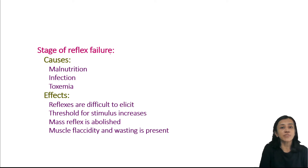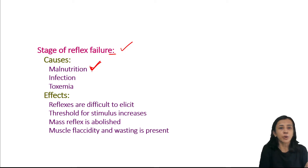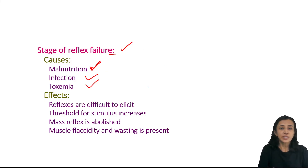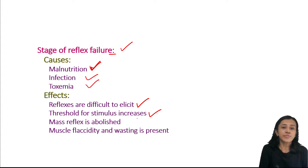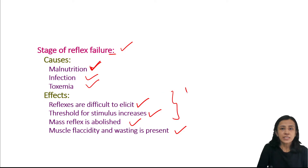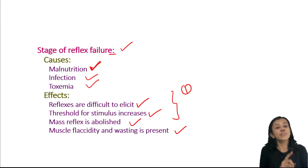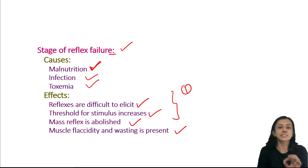The third stage is the stage of reflex failure, in which reflex activity becomes absent. Causes include malnutrition, infection, or toxemia. Effects include: reflexes being difficult to initiate; an increased threshold for reflexes; absence of the mass reflex; and flaccid paralysis with muscle wasting. This concludes the discussion of complete transection of the spinal cord.